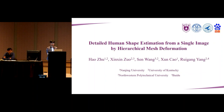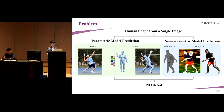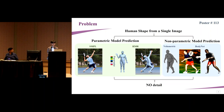I'm Hao Zhu from Nankai University. We propose a novel learning-based framework for recovering human shape from a single image, combining the robustness of a parametric model with the flexibility of free-form 3D deformation. Previous works either predict parametric model coefficients or non-parametric shapes in voxel space, but both fail to recover shape details. To solve this, we propose a framework of multiple networks to reconstruct shape from coarse to fine.